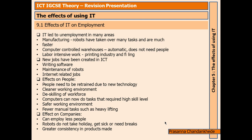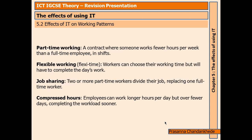Effects of IT on working patterns include part-time work, flexible hours, job sharing, and compressed hours. Part-time is a contract where someone works fewer hours per week than a full-time employee. Flexi-time allows workers to choose their working time but they must still complete the day's work. Job sharing is where two or more part-time workers divide a role, replacing one full-time worker.